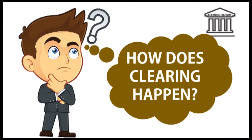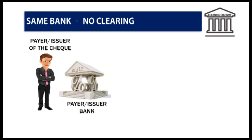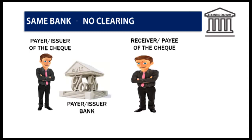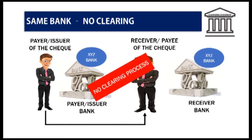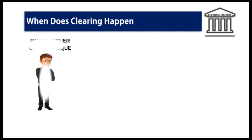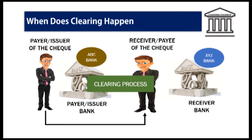First, let us understand the situation where clearing comes into place. Clearing comes into place only when a check is issued where two banks are involved. If I give a check to Mr. A who has an account in the same bank as I have, then the process of clearing will not be initiated. If I give a check to Mr. A who has an account in another bank, then the clearing process will take place. It's very important to understand that the giver and the receiver of the check must have accounts in different banks — only then does clearing come into place.